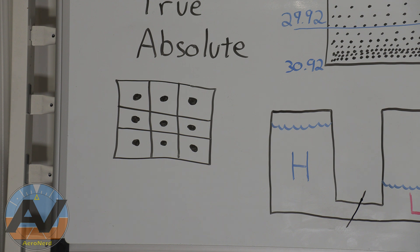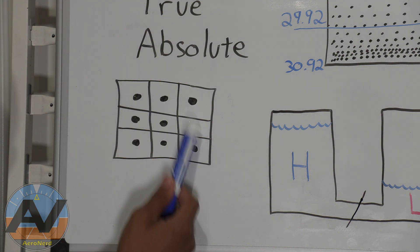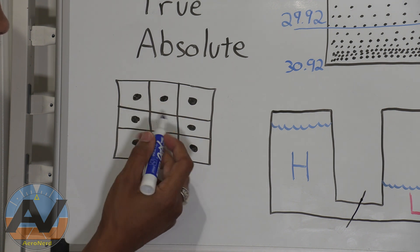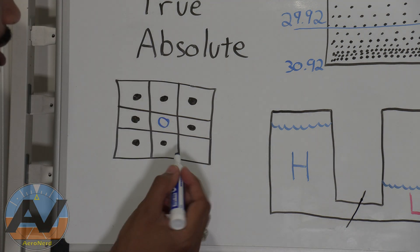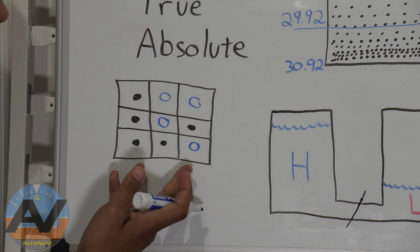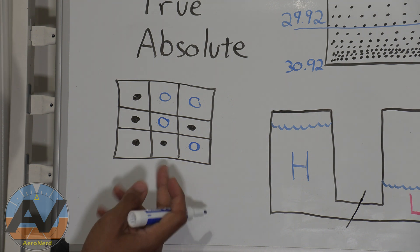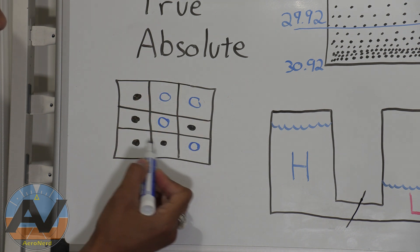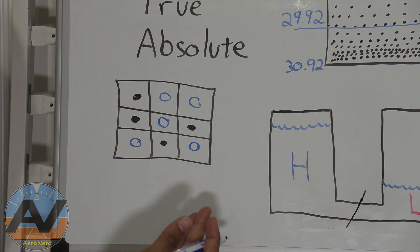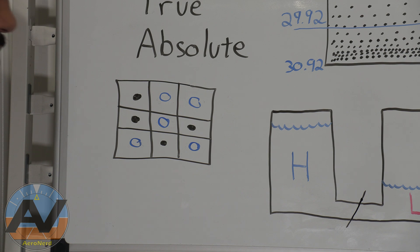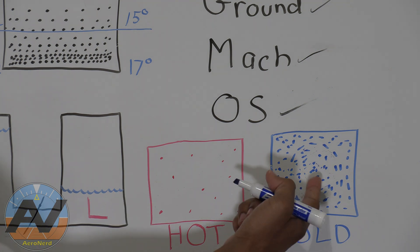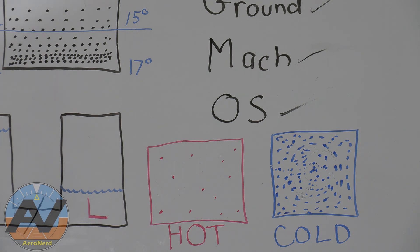What happens when the air is humid? The water vapor has to fit somewhere, and in fitting, it takes the place of air molecules — so you end up with fewer air molecules, say four instead of nine. So the aircraft performance is going to decrease because it simulates a very low pressure situation. High humidity means low aircraft performance.